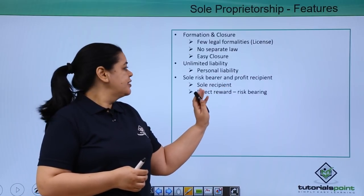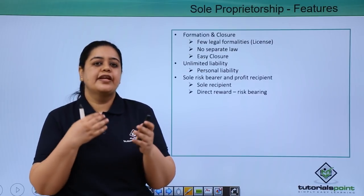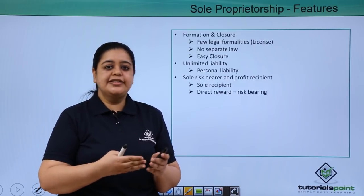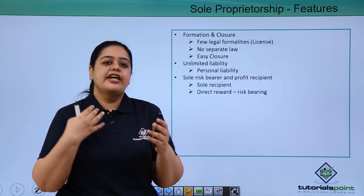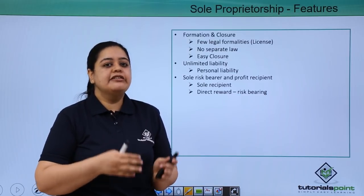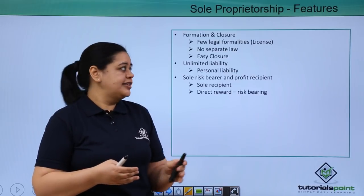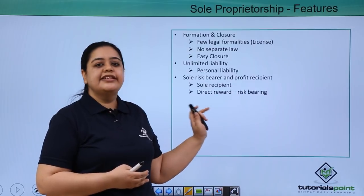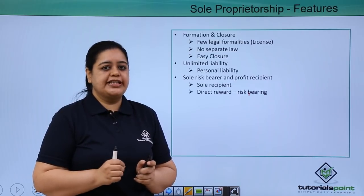The next feature is sole risk bearer and profit recipient. The proprietor has to bear all the risks — as in the example, if there are losses, Rama has to bear them. But suppose she makes a profit of ₹1 lakh in the first year — the entire profit would be hers alone. She doesn't have to share the profit with anyone else. She is the sole recipient of profit, and the direct reward is given to her because she is the only risk-bearing person in the organization.